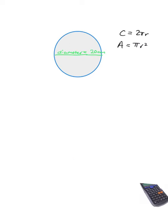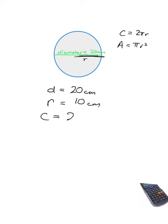Let's do a quick example. Calculate the circumference and the area of a circle which has a diameter of 20 centimeters. I'm going to go to my formulae: circumference is 2πr, area is πr². In both of those I need to know the radius, but I've only been given the diameter. That's not a problem because the radius is just half of the diameter — so if the diameter is 20 centimeters, the radius will be 10 centimeters. For the circumference I calculate 2 × π × 10 centimeters.